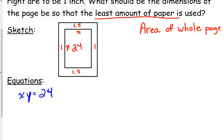Very rarely are they going to give you information that you're not going to use. So the length times the width of the printed area is 24. That's going to be our secondary equation. Why do I know that? Because it's not what I'm trying to optimize. I'm trying to optimize the whole page. I know the area of that part.